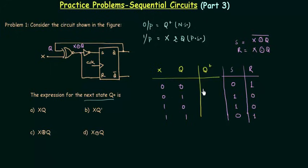Now we can easily find out the next state Q+ because we know the truth table for SR flip-flop and we have to use that only. When S is 0 and R is 1, the next state is going to be 0. When S is 1, R is 0, next state is 1, and again we have next state as 1 and then we have next state as 0.